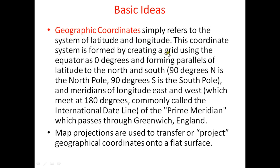This coordinate system is formed by creating a grid using the equator at 0 degrees, and forming parallels of latitude to the north and south up to 90 degrees. The equator is 0 degrees; going north up to 90 degrees gives the north pole, and going south 90 degrees gives the south pole.